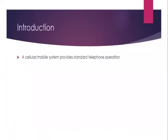A cellular system provides standard telephone operation and it offers full duplex communication. In a full duplex system, both parties can communicate with each other simultaneously. There is a separate channel for sending and receiving information, so people can talk and listen simultaneously.